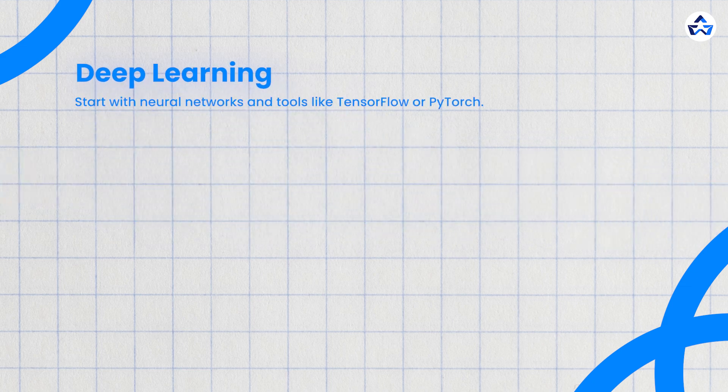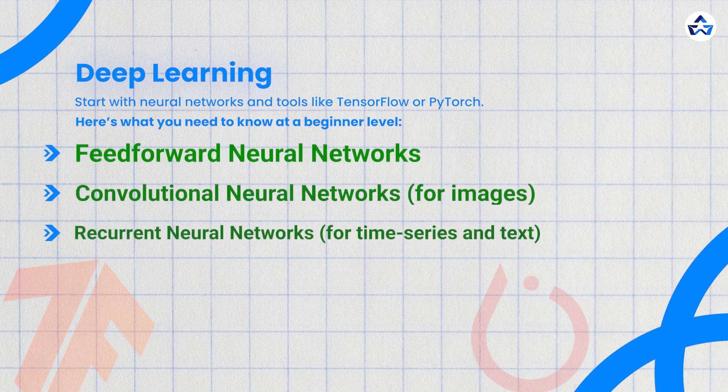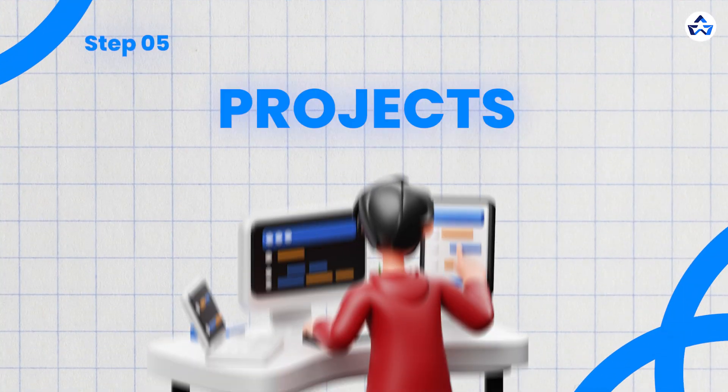Start deep learning with neural networks and tools like TensorFlow or PyTorch. At a beginner level, you need to know feed-forward neural networks, convolutional neural networks for images, and recurrent neural networks for time series and text. Don't worry — you don't need to become an expert right away. Focus on understanding the architecture and building small projects. The goal is to move from theory to real-world projects as early as possible.